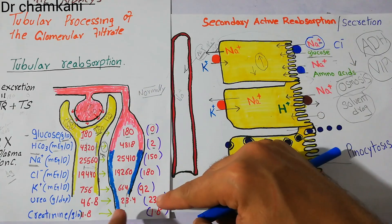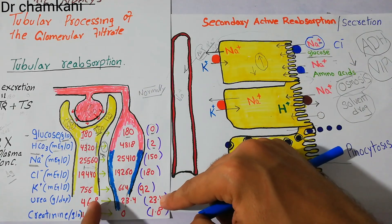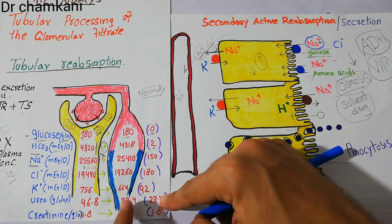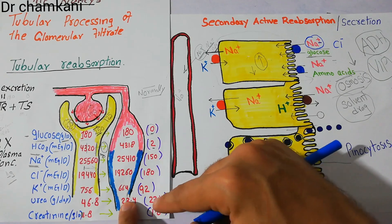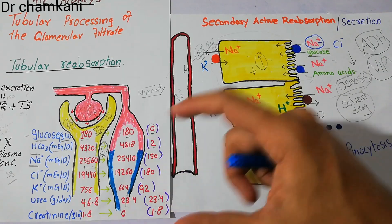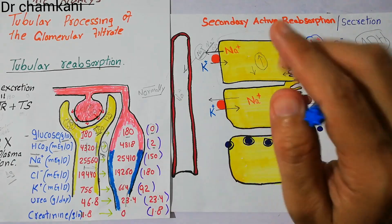To clarify — this is not a percentage figure, this is the amount. Out of 46 grams of urea filtered, 23 grams is reabsorbed and 23 grams goes into the urine. So around 50% of urea will be excreted in urine.